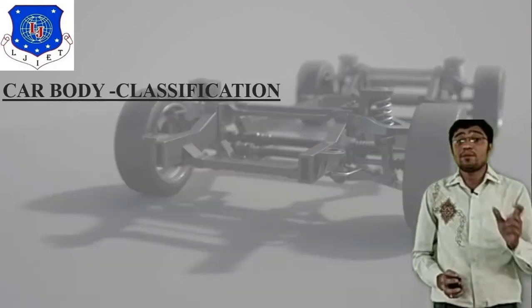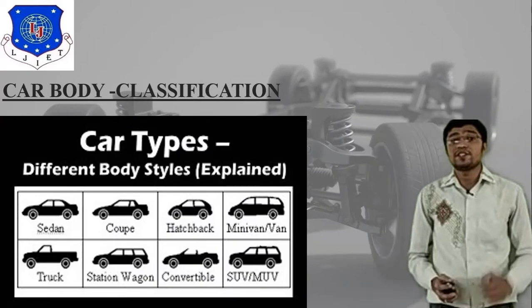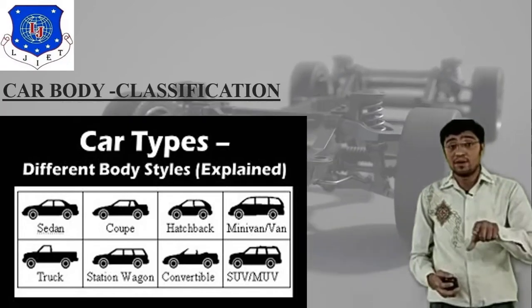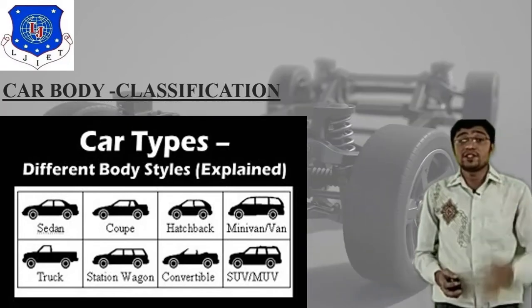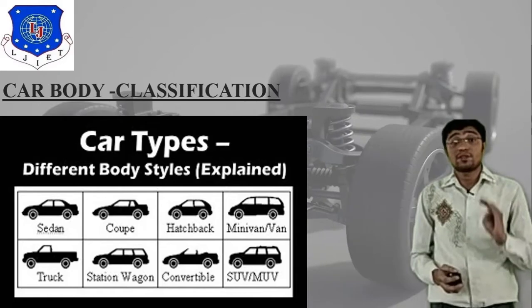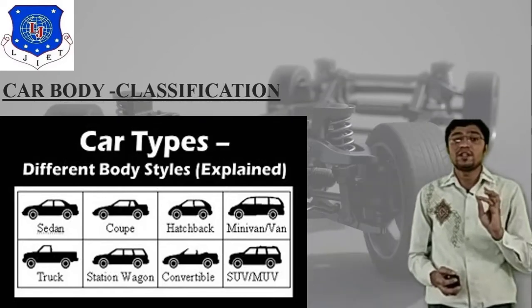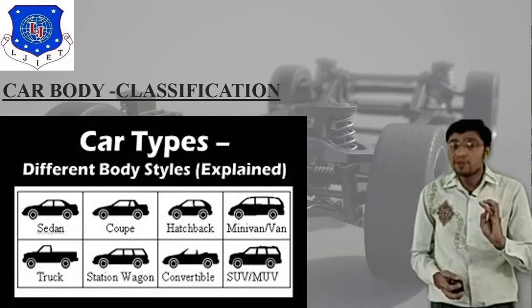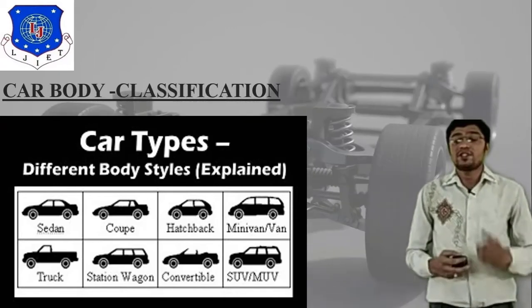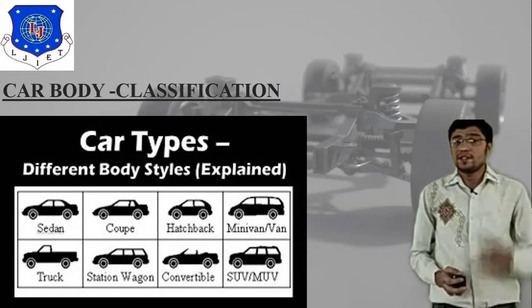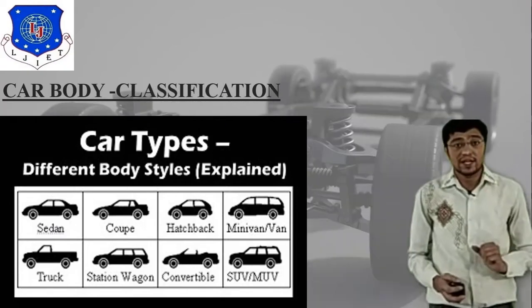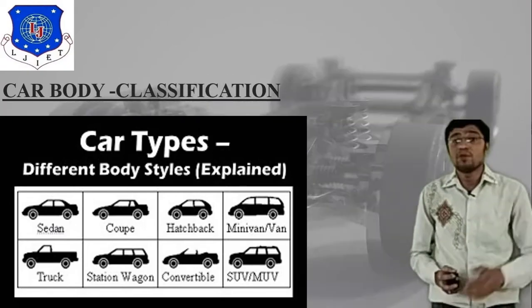Next is car body classification. Here I have attached one image directly related to different types of car body — distinct from the vehicle body classification. There are eight different types of car body: sedan, coupe, hatchback, minivan, truck, station wagon, convertible, and SUV/MUV. In this session we will discuss only two: sedan car and hatchback car.